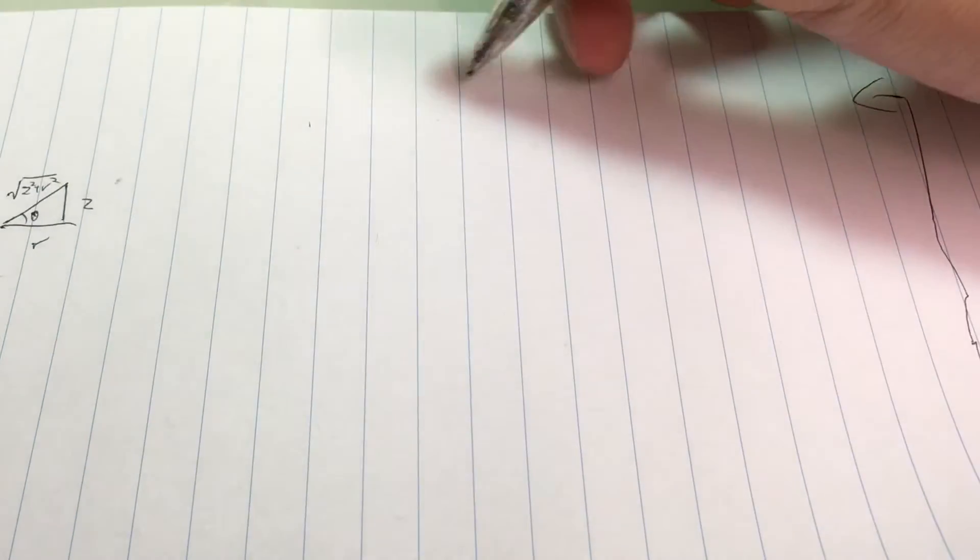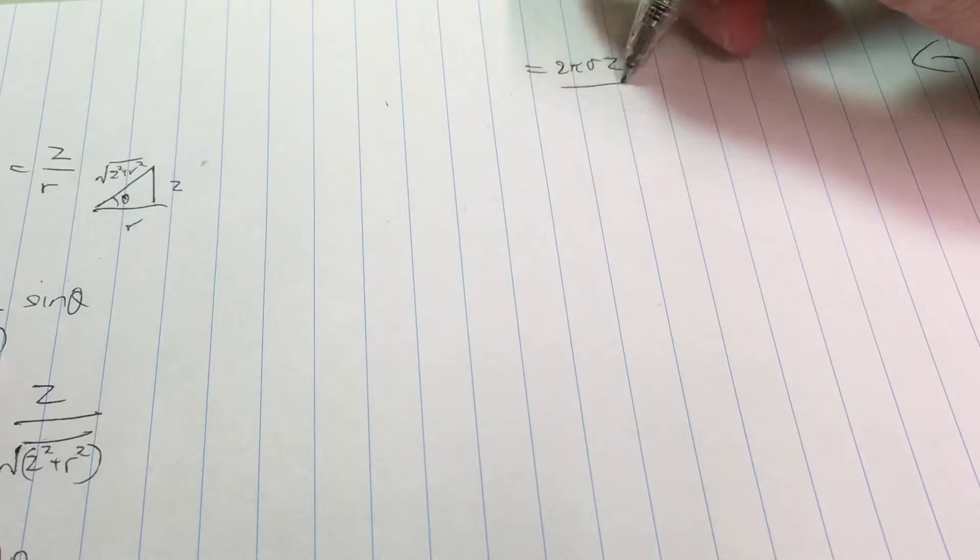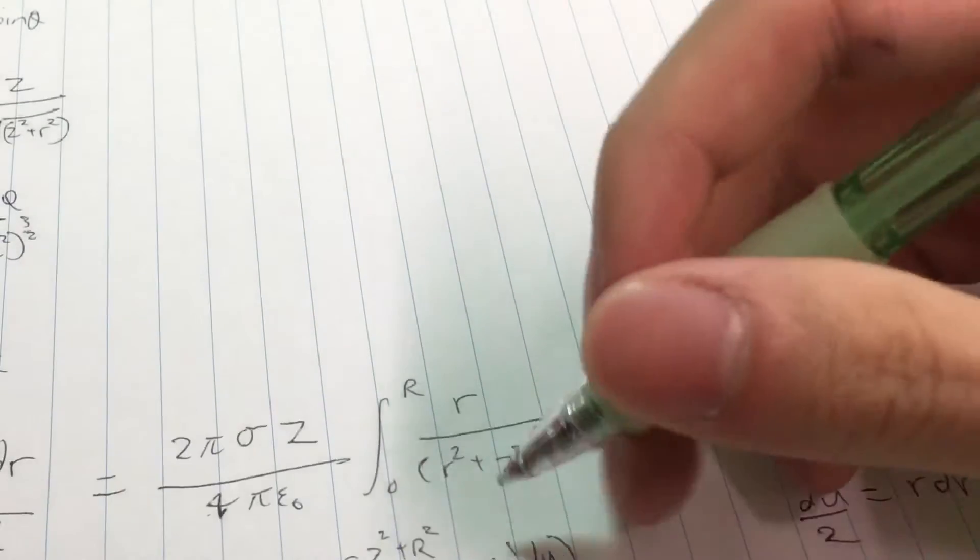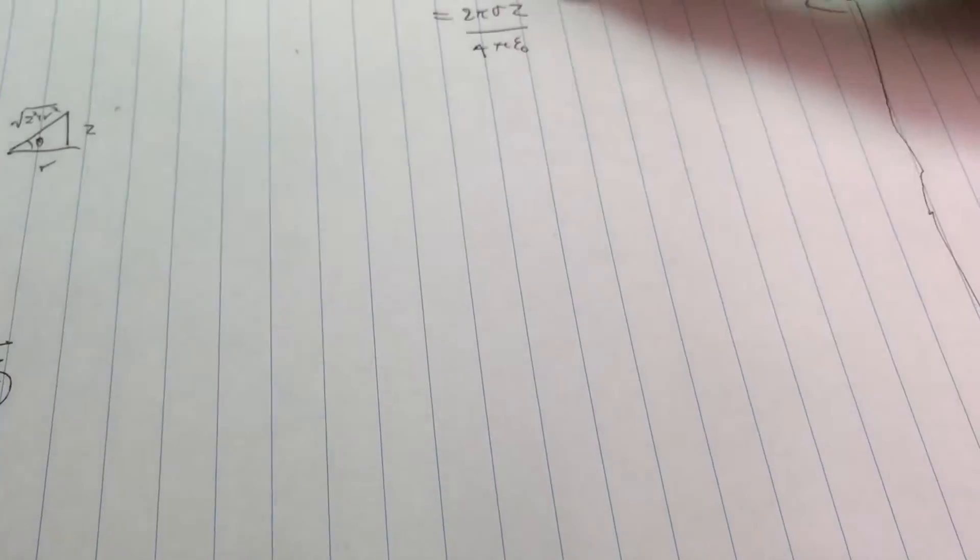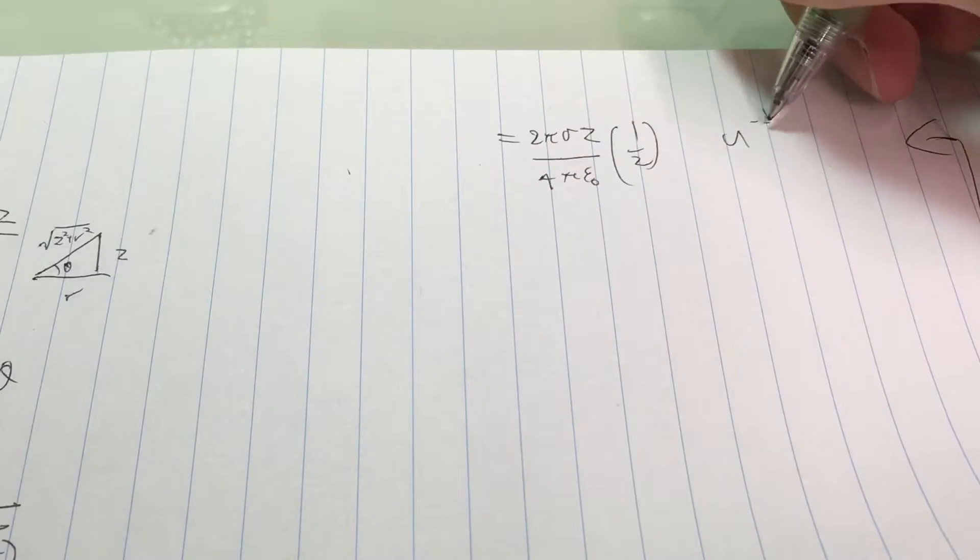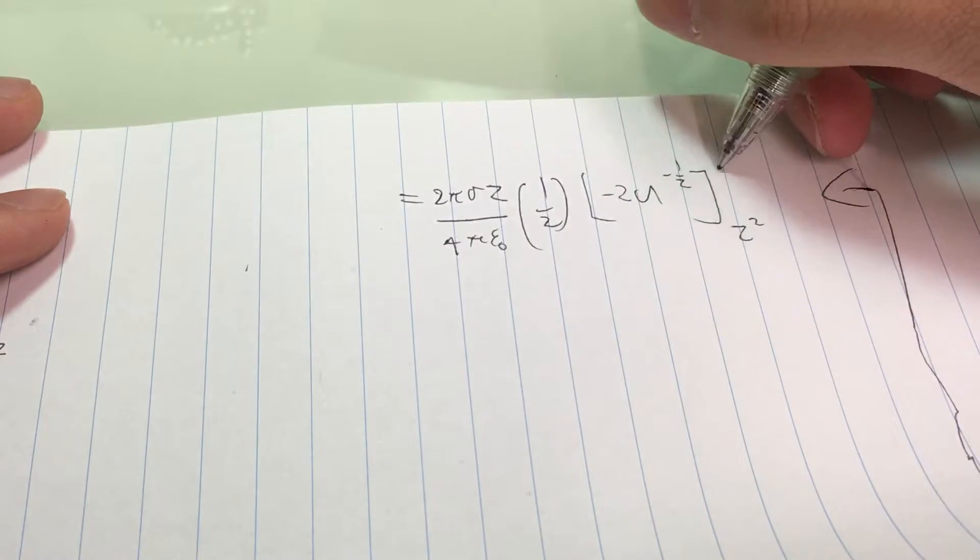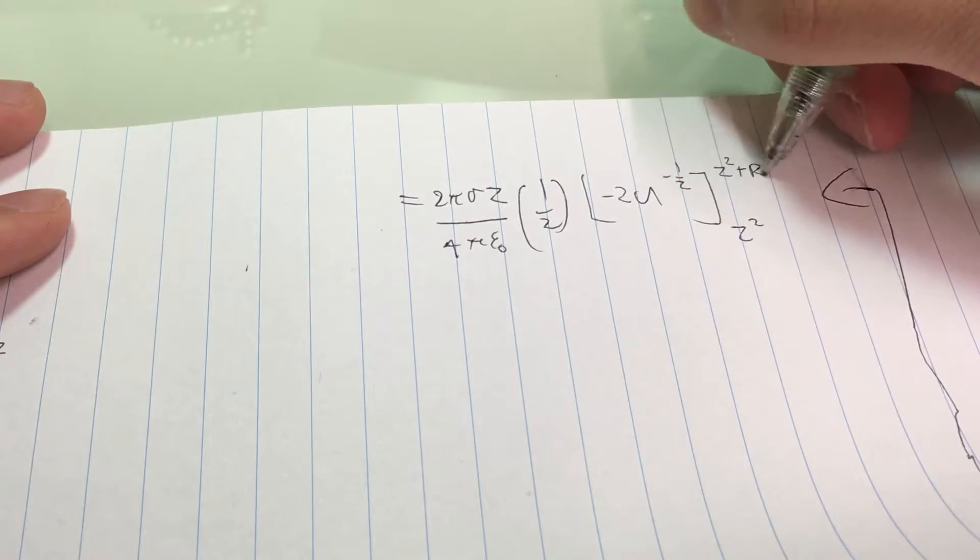Let me transfer this up here. This integral is simple enough. Don't forget this 1 over 2 here. Now we have to integrate this. That's really just this. I think you can prove this easily enough yourself. This goes from z squared all the way to z squared plus R squared.